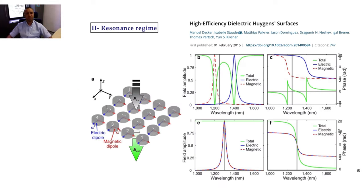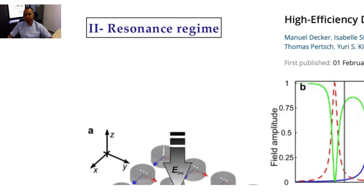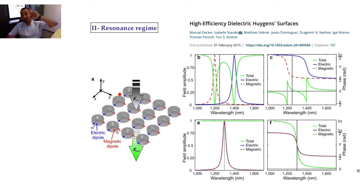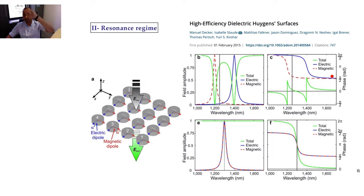The second approach is the resonance approach. Instead of relying on tall nanoresonators, you consider very thin nanodiscs. You excite them and observe two resonances — shown in blue and red. By tuning the parameters slightly, you can make these two resonances overlap. Each resonance individually gives only 0 to π in phase response — one π for the red, one π for the blue. But if you mix them together with overlap, you can achieve the full 2π phase modulation. This is another technique to ensure the resonator gives you the desired phase response.